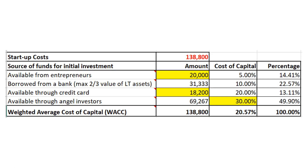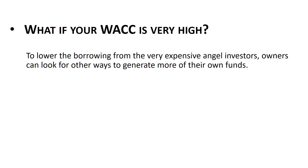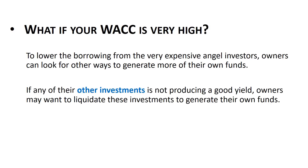If the weighted average cost of capital is very high, it will make your business look less profitable because borrowing is very costly. The more money you have saved up in self-financing, the less you need to borrow from angel investors at their high interest rate, and the lower your WACC will be. If your WACC is too high, owners can look for other ways to generate more funds — for example, liquidating other investments that aren't producing a good yield.